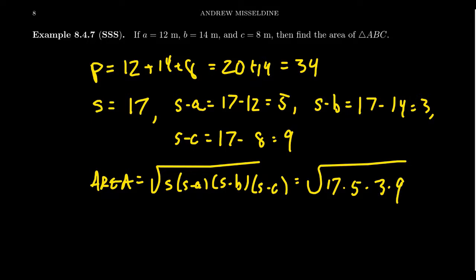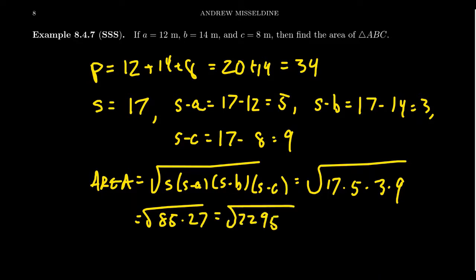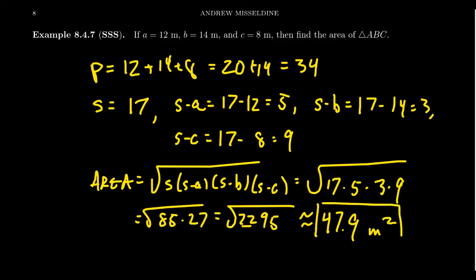By Heron's Formula, the area equals the square root of s times (s − a) times (s − b) times (s − c). Plugging in: s = 17, s − a = 5, s − b = 3, s − c = 9. So we get the square root of 17 × 5 × 3 × 9. That's 85 × 27 = 2295, so the exact area is √2295. The approximate value from a calculator is 47.9 square meters.